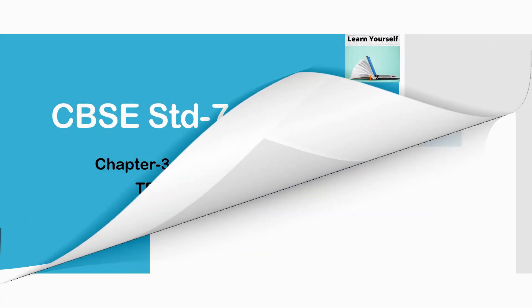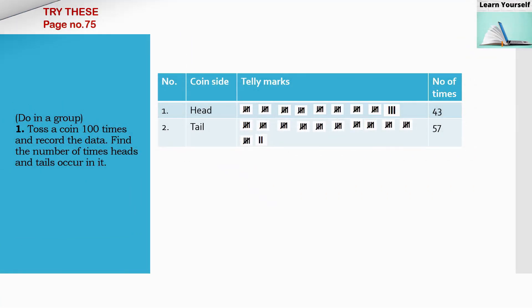Welcome to Learn Yourself. Try these sums from chapter number 3, page number 75. The first question is: toss a coin 100 times. We have to toss a coin 100 times, record the data, and find the number of times heads and tails occur.